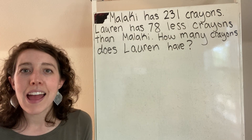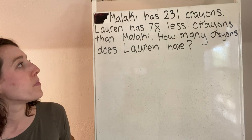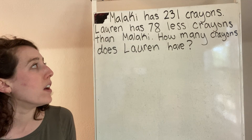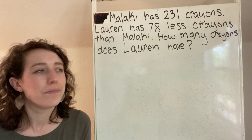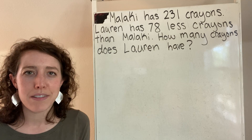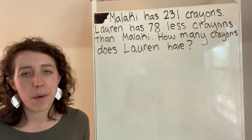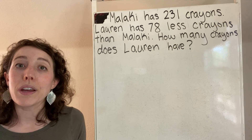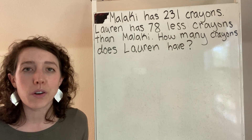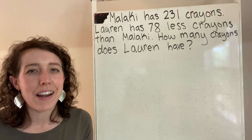Malachi has 231 crayons. Lauren has 78 less crayons than Malachi. How many crayons does Lauren have? This is what we call a comparative problem because we are comparing two things — we're comparing the amount of crayons that Malachi has to the amount of crayons that Lauren has.